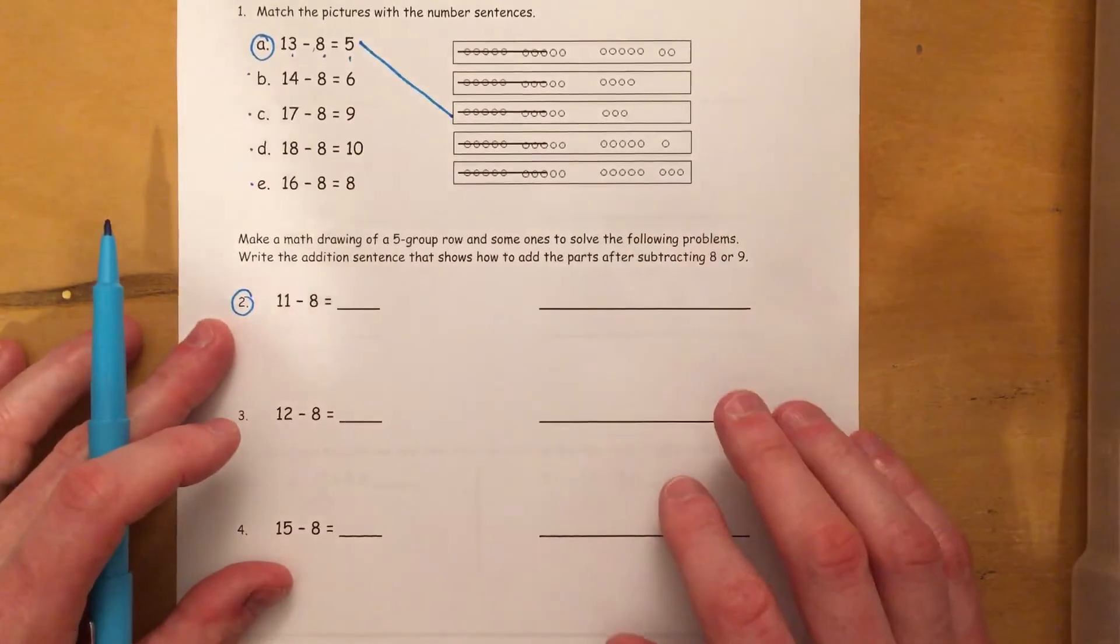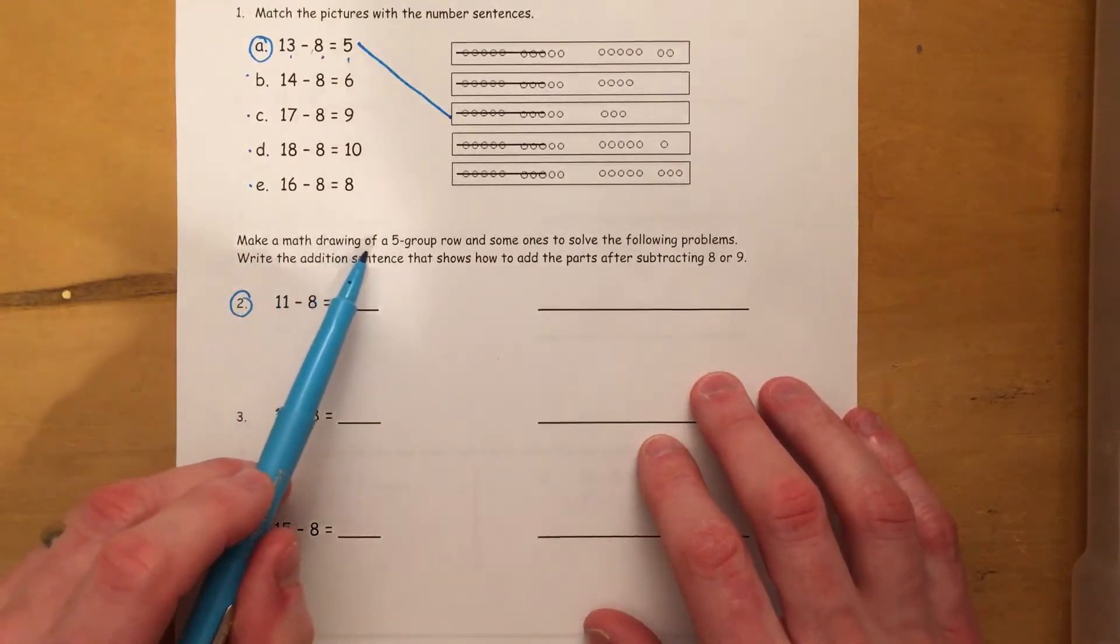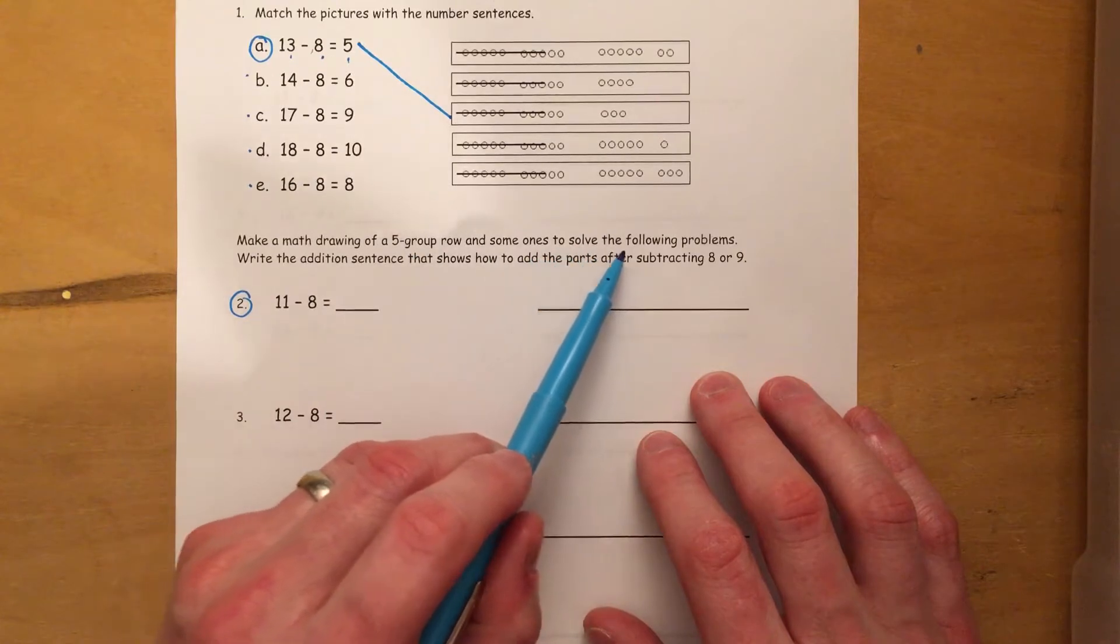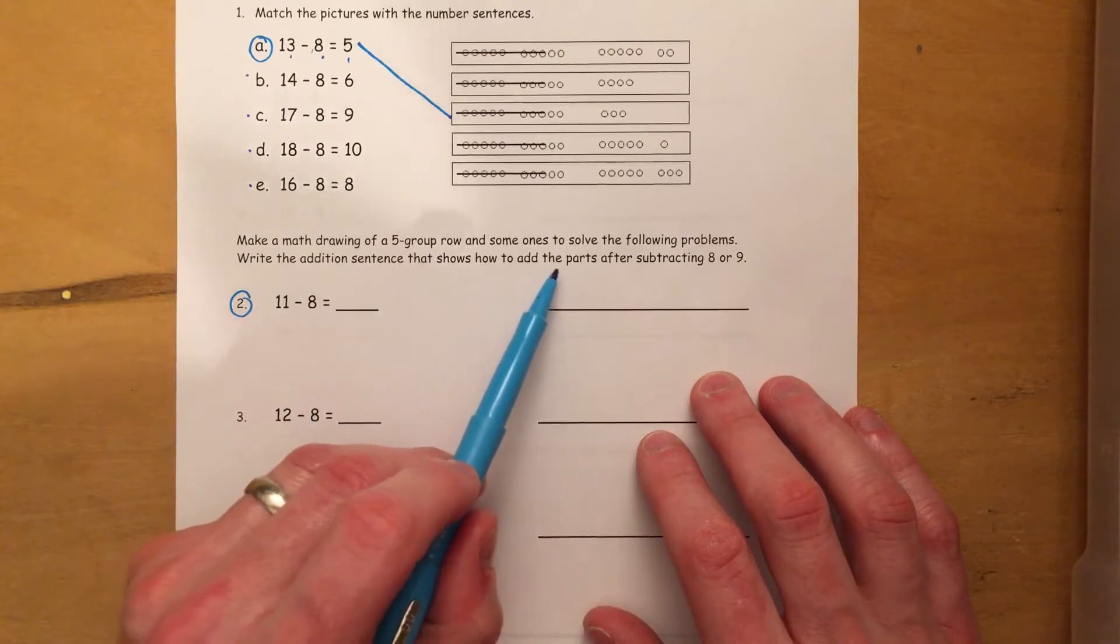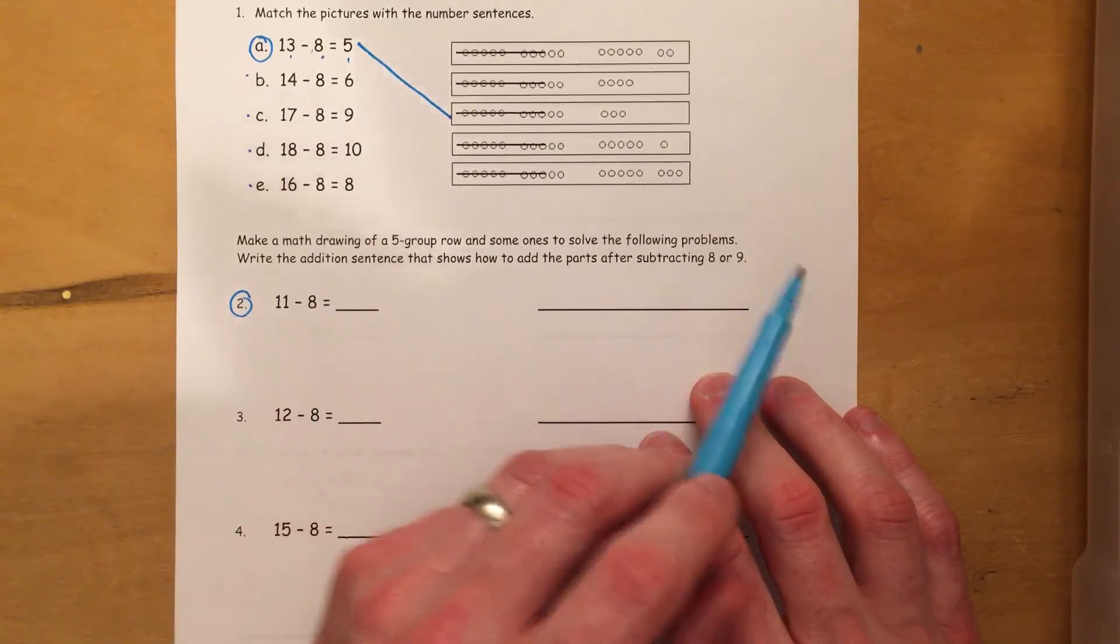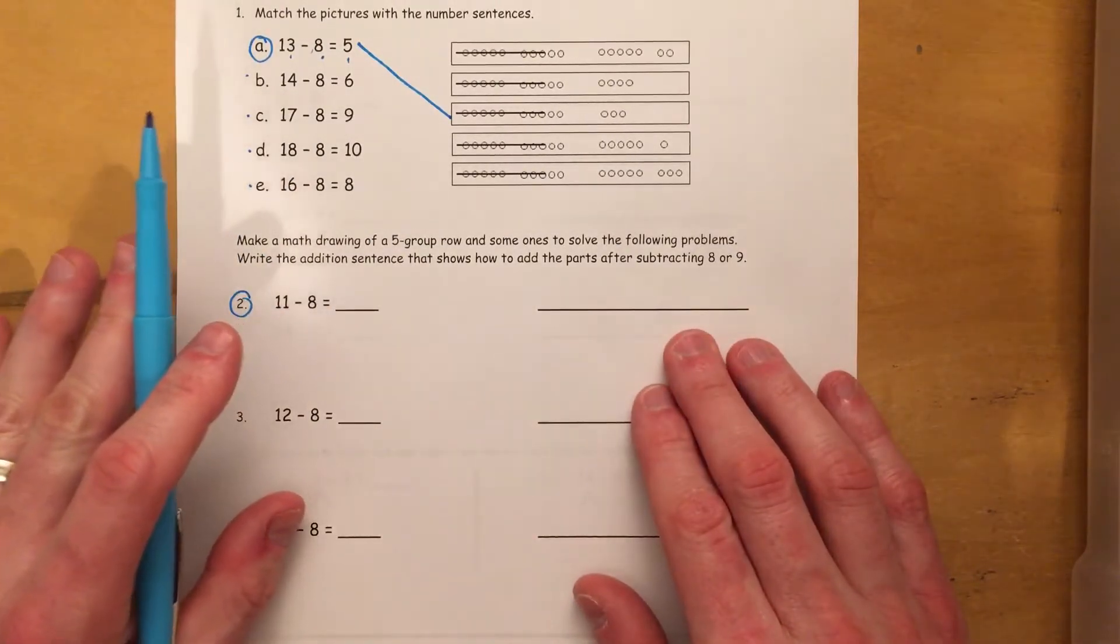All right. Moving on. We need to make a math drawing of a 5-group row and some 1s to solve the following problems. Write the addition sentence that shows how to find the parts after subtracting 8 or 9. Okay, so this is exactly like what we were doing in our lesson.